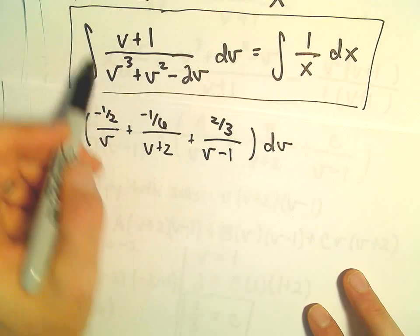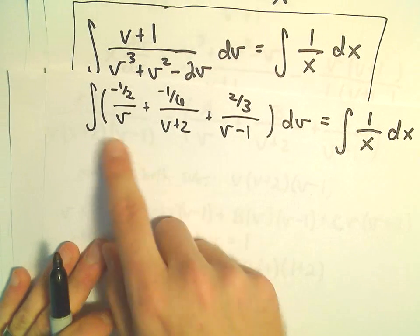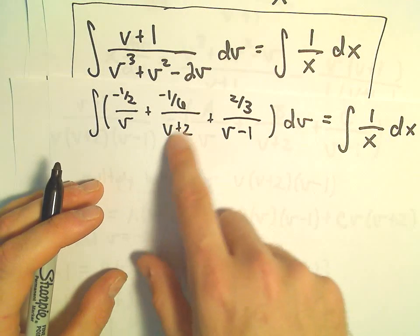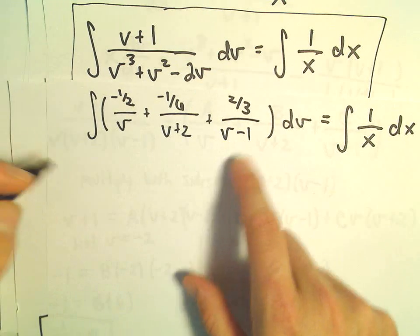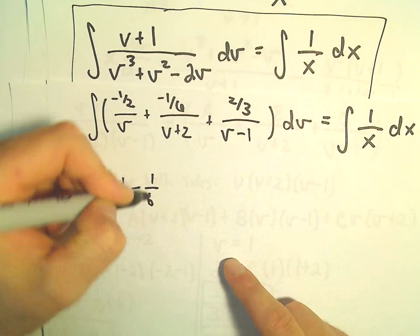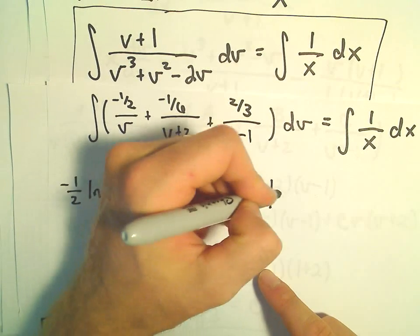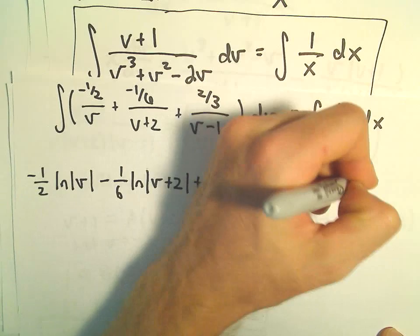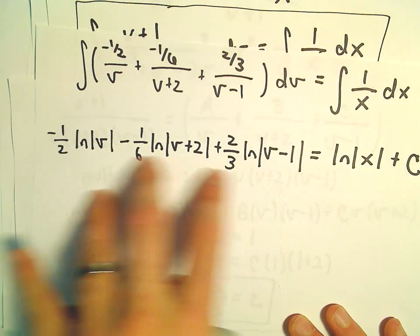That integral equals the integral of 1/x dx. Each term can be integrated using a u-substitution. Integrating gives: -1/2·ln|v| - 1/6·ln|v + 2| + 2/3·ln|v - 1|. On the right side, the antiderivative of 1/x is ln|x| + C.